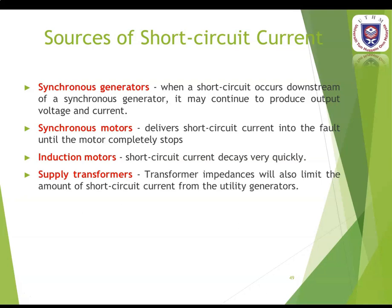For synchronous generators, when a short circuit occurs downstream, the generator may continue to produce output voltage and current. Generators are driven by turbines, water wheels, diesel engines, or other prime movers. When a short circuit occurs, the generator will continue to produce voltage at its terminals as long as field excitation is maintained. The generator voltage causes large fault current limited only by the generator impedance and circuit impedance between generator and fault point.